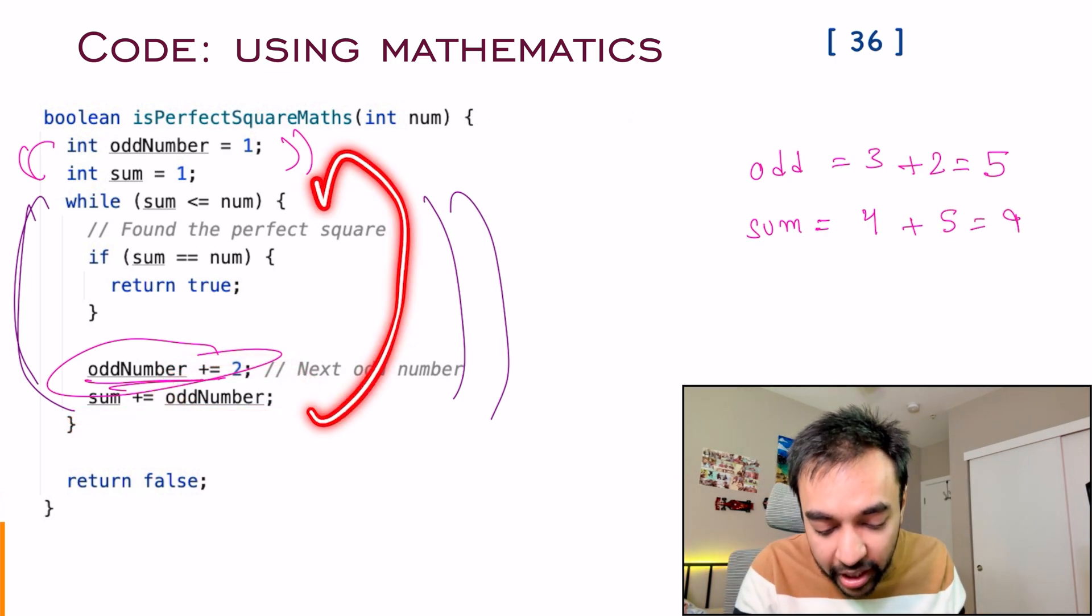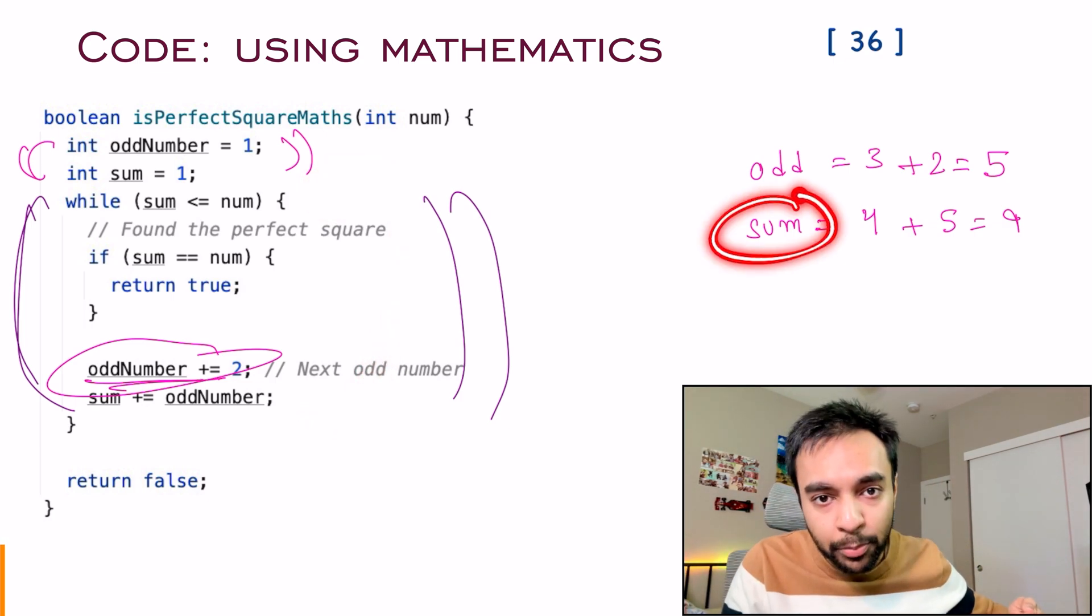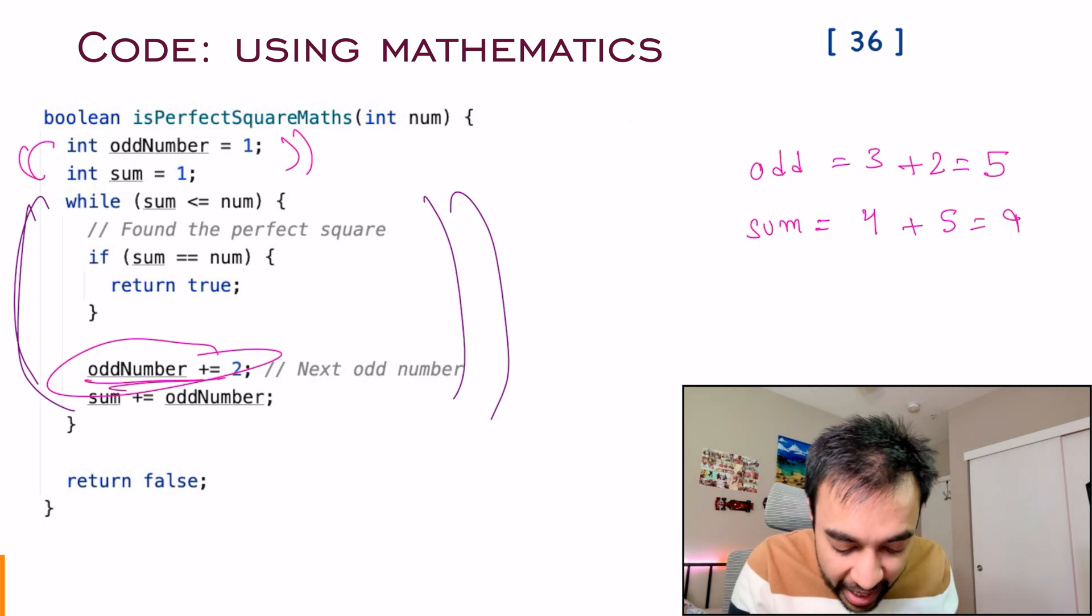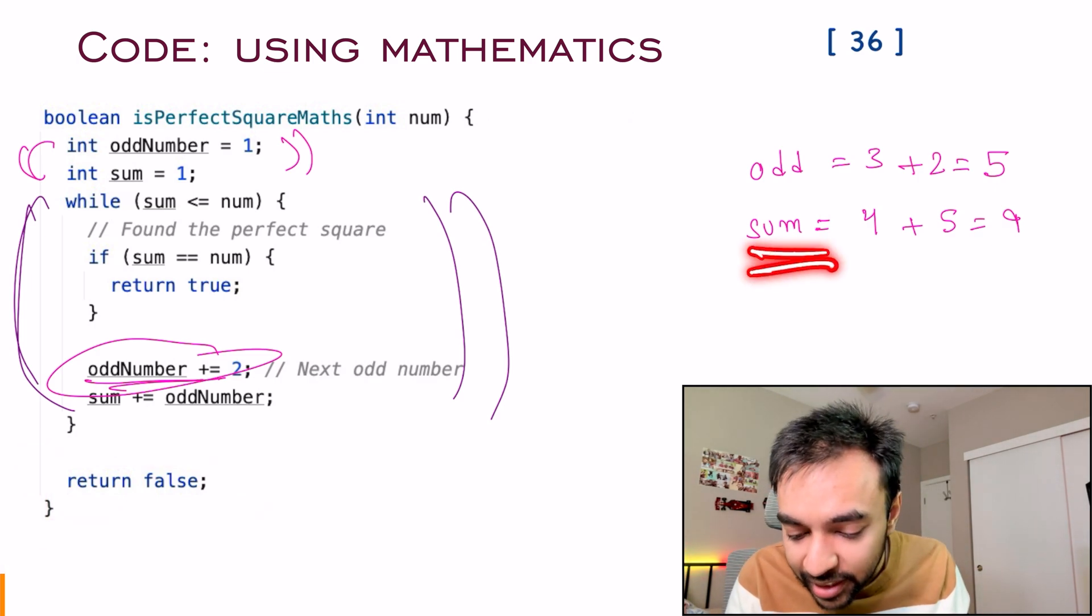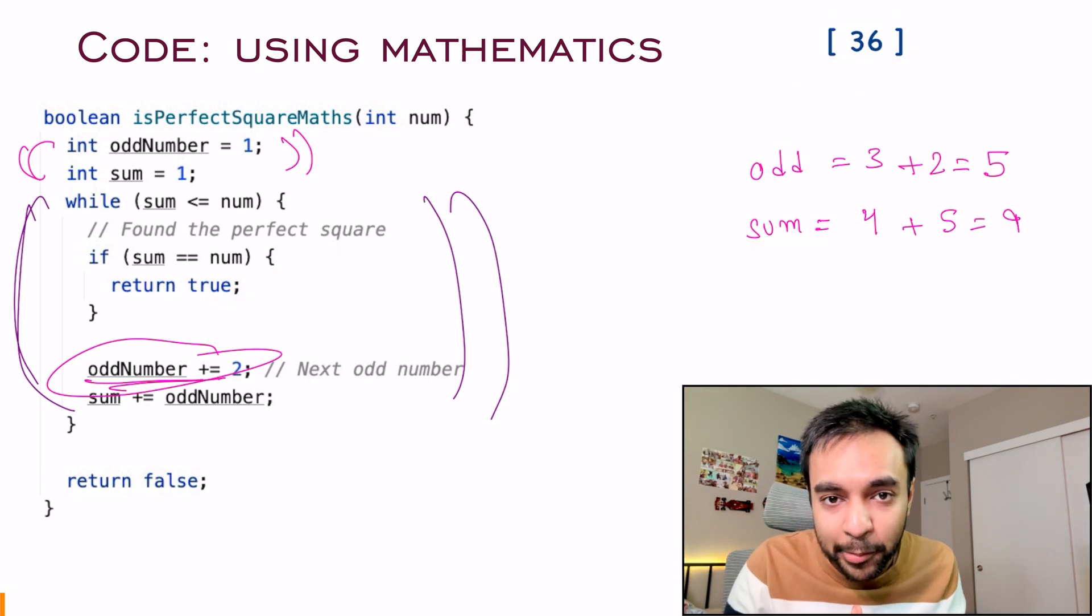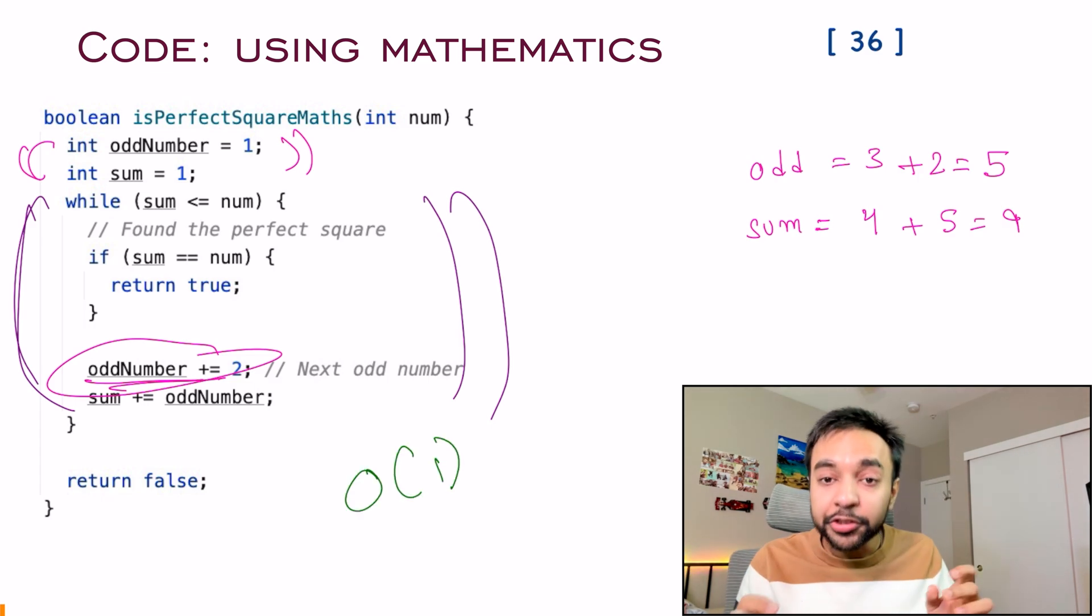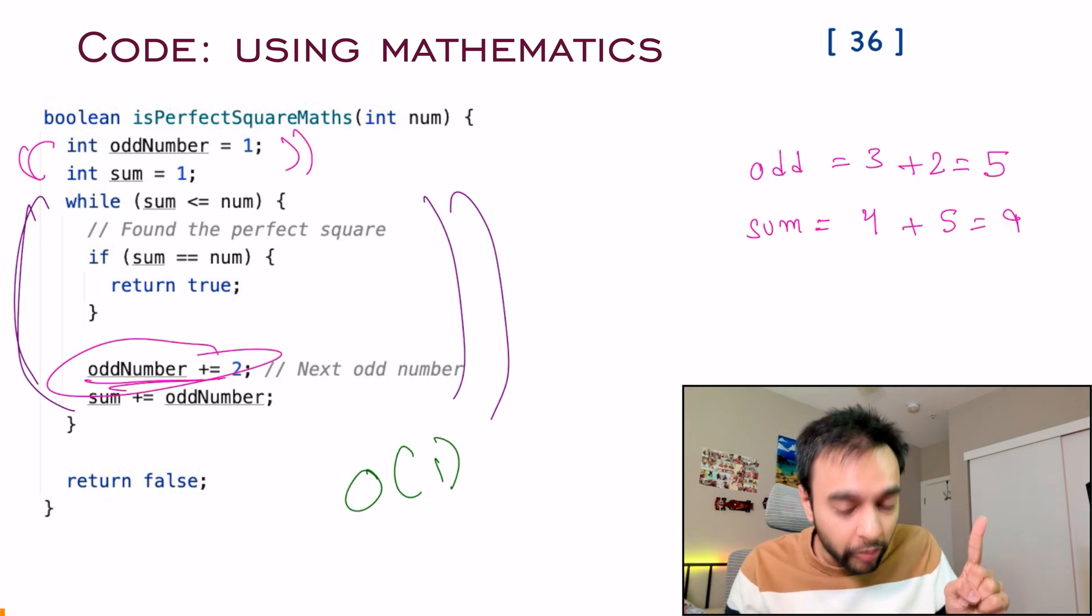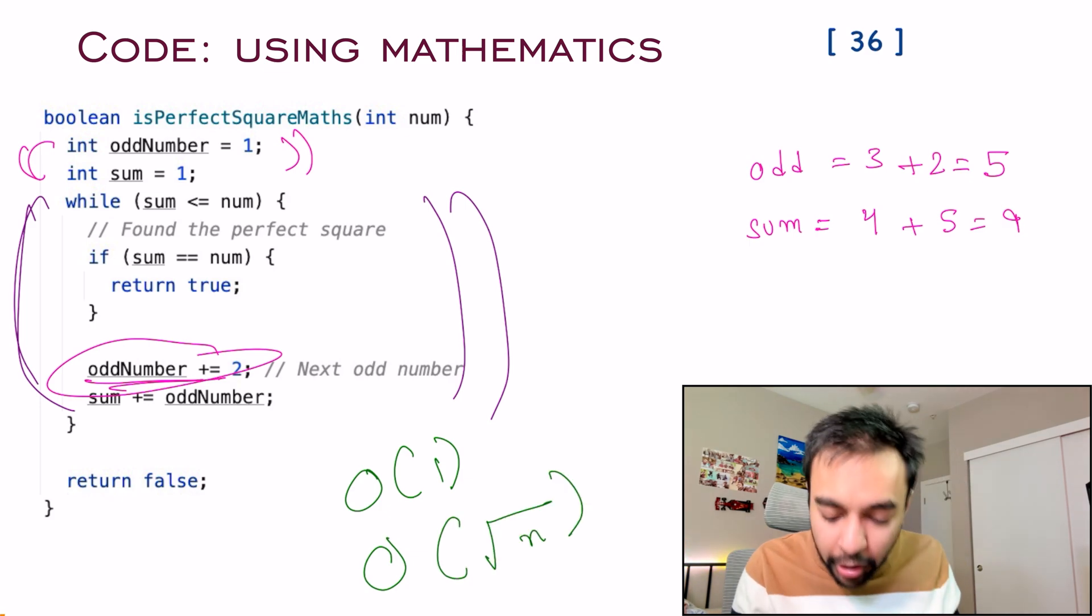If this sum becomes greater than the input number, this loop will break and you can simply return a false. If at any instance, this sum equals to 36, you can simply return a true. And that is the mathematical beauty. This solution does not require any extra space. So the space complexity is order of one. And this solution works in the time complexity of order of square root of n.